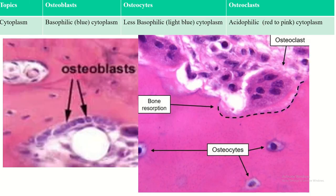The cytoplasm of the osteoblast and osteocyte is basophilic, meaning the cytoplasm looks bluish. The cytoplasm of the osteoblast is more bluish than the cytoplasm of the osteocyte. The cytoplasm of the osteoclast is acidophilic, so its colour is red to pink.